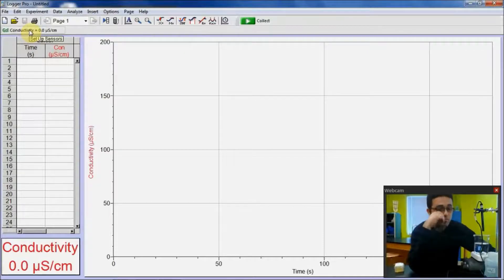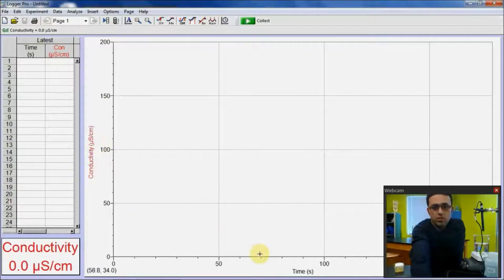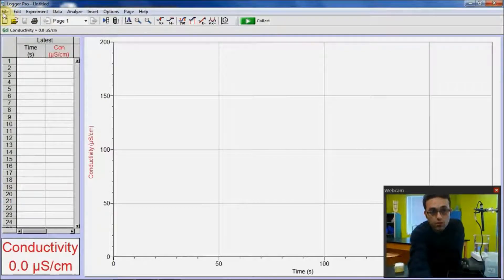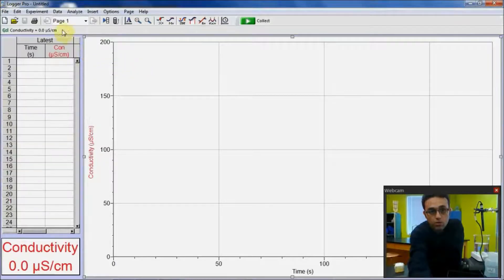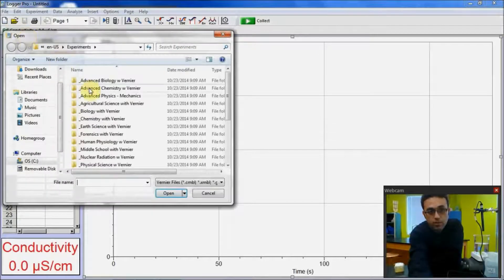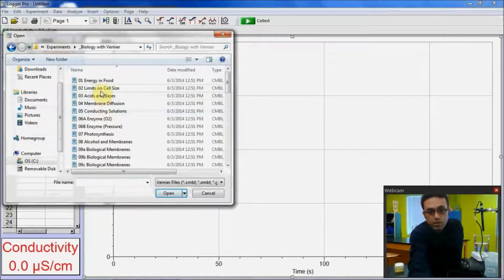the software recognizes the conductivity probe here. And you can use this setup for conductivity versus time. But there is a preset setup for this particular experiment. So you either go click on this file and select open, or you click on this. So it will open the experiment files. You will click on biology with Vernier and you will select the limits on cell size.